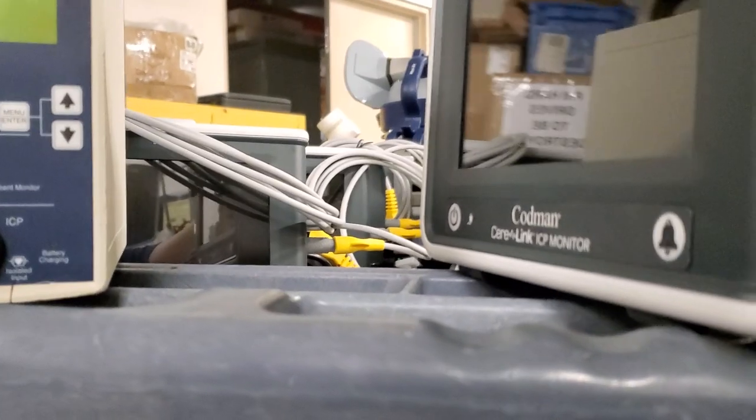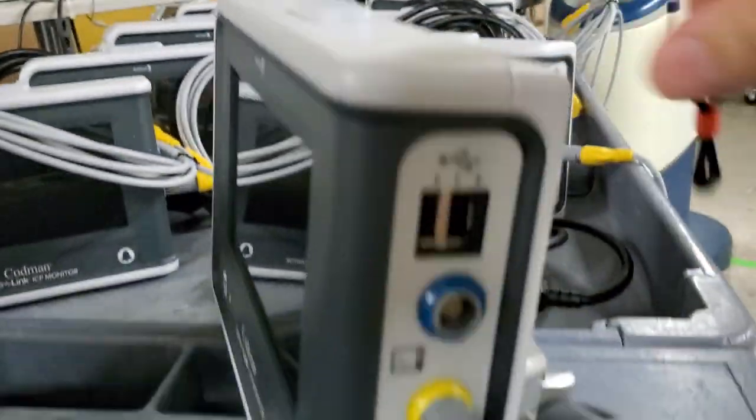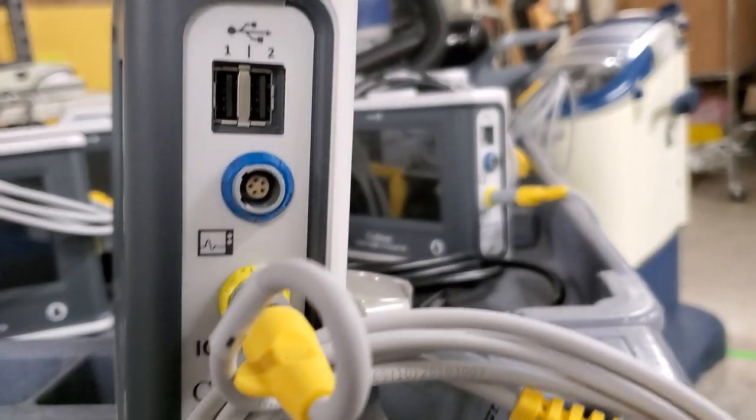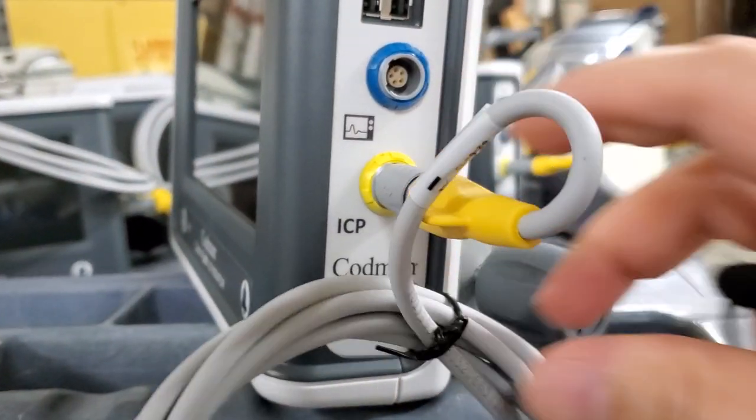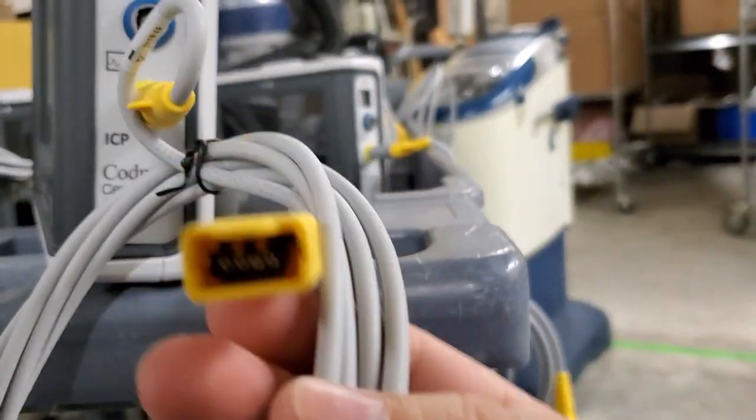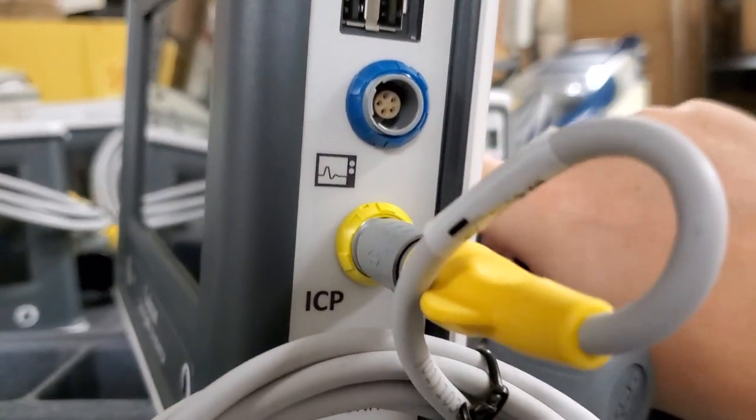But as far as the device itself, it looks like it's got an LED strip at the top that gives you its condition status or the patient condition status. I've got the ICP line right here which runs to your pressure transducer. This one right here, I'm not really sure.